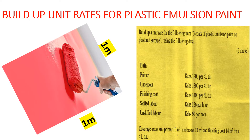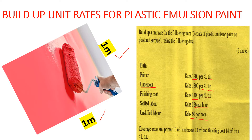We have the primer at Kenyan Shillings 1,200 per 4-liter tin, an undercoat at 1,300 per 4-liter tin, and a finishing coat at 1,400 per 4-liter tin. Skilled labor is 126 per hour and unskilled labor is 60 per hour. Coverage areas: primer covers 10 m², undercoat covers 12 m², and finishing coat covers 14 m² per 4-liter tin.